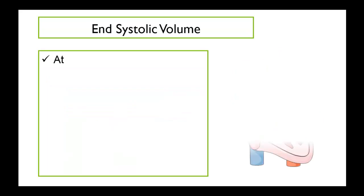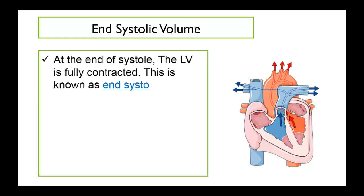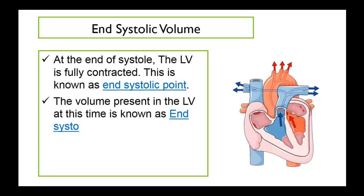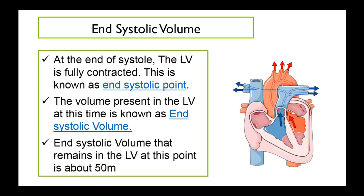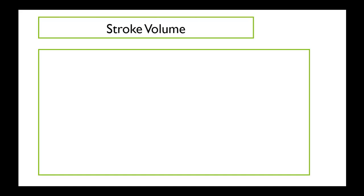At the end of systole, the left ventricle is fully contracted, and this is known as the end-systolic point. The volume present in the left ventricle at this time is known as end-systolic volume. The end-systolic volume that remains in the left ventricle at this point is about 50 milliliters of blood.